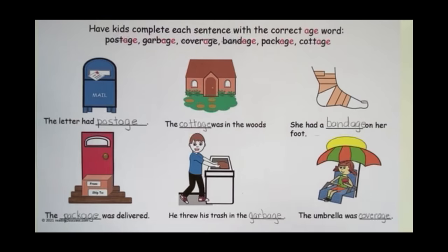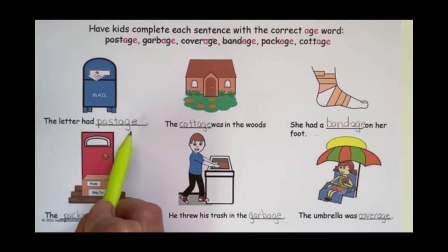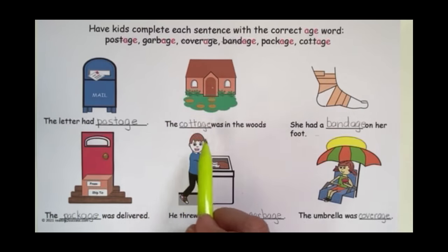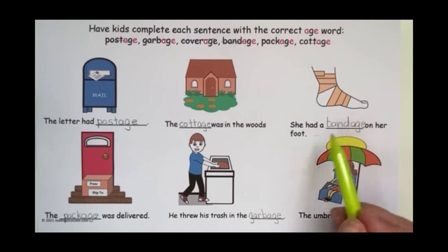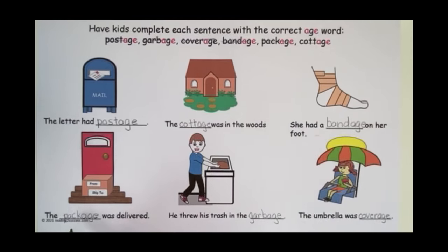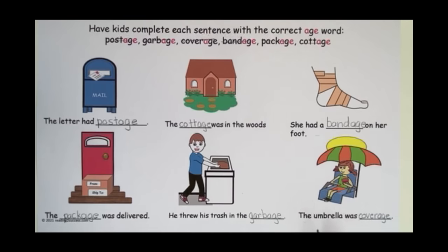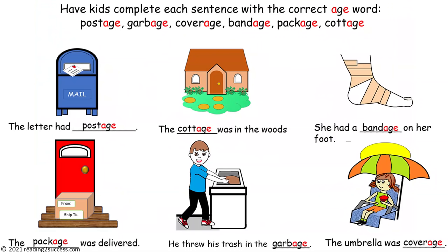Now let's review the sentences to make sure they make sense. The letter had postage — yes. The cottage was in the woods — yes. She had a bandage on her foot — yes. The package was delivered — yes. He threw his trash in the garbage — yes. And the umbrella was coverage — yes. This is a completed example.